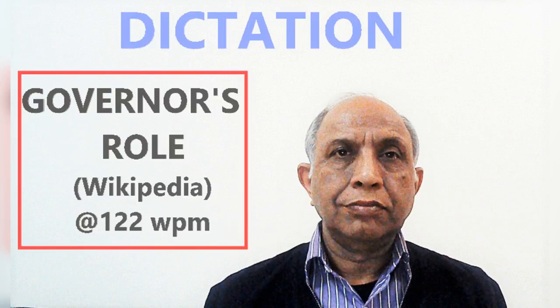The governor can return a bill to the state legislature, if it is not a money bill, for reconsideration. However, if the state legislature sends it back to the governor for the second time, the governor must assent to it. The governor has the power to reserve certain bills for the president.